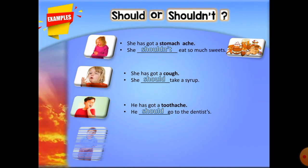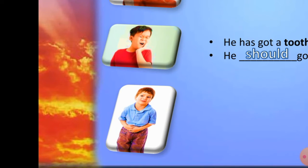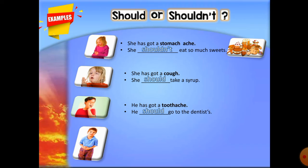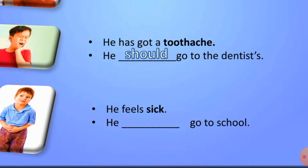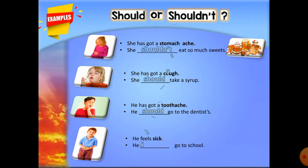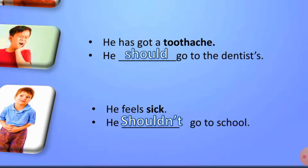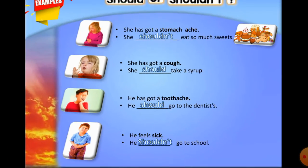And the last kid: he feels sick — should he go to school? No! He shouldn't go to school — he should stay in bed at home. So these are just some examples about 'should' and 'shouldn't.'